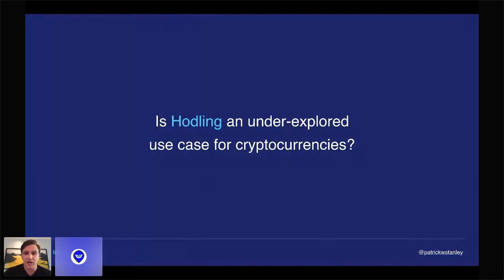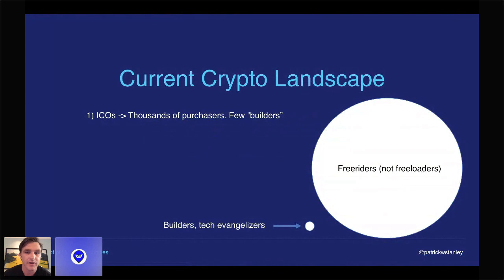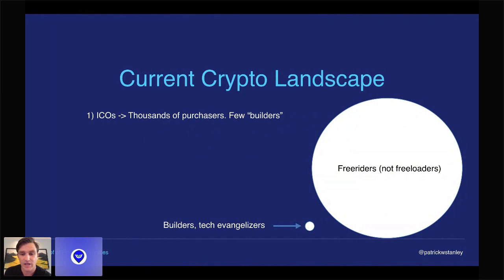Starting with the first question: is HODLing an underexplored use case for cryptocurrencies? This is a thread I've been pulling since October of last year, with some guidance from folks in the crypto community like Joel Menegro and Balaji Srinivasan. ICOs typically have thousands of purchasers and very few builders, and what that does is create a bunch of free riders — people who benefit from the work of builders and tech evangelizers, but may not actually do any work or get any utility out of the investment they're purchasing.